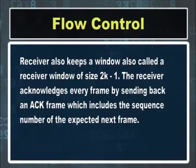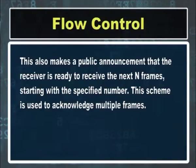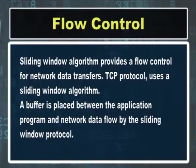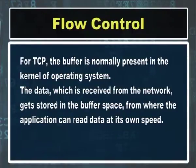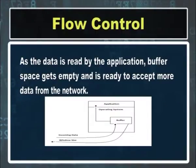The receiver also keeps a window called the receiver window of size 2k − 1. The receiver acknowledges every frame by sending back an acknowledgement frame that includes the sequence number of the expected next frame, and announces that it is ready to receive the next n frames starting with that number. This scheme can acknowledge multiple frames. TCP protocol uses a sliding window protocol. A buffer is placed between the application program and network data flow by the sliding window protocol. For TCP, the buffer is normally present in the kernel of the operating system. Data received from the network gets stored in the buffer, from where the application can read data at its own speed. As data is read, buffer space becomes empty and is ready to accept more data.